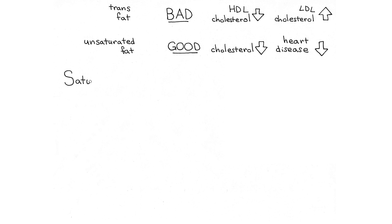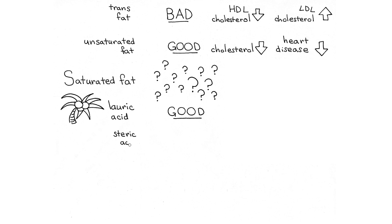What about saturated fat, the solid fat with no double bonds? There are more than two dozen kinds of saturated fat and each of them affects the body in its own way. Lauric acid, found in coconut oil, is actually thought to be beneficial, like olive oil. Stearic acid, found in chocolate, doesn't affect blood cholesterol at all.